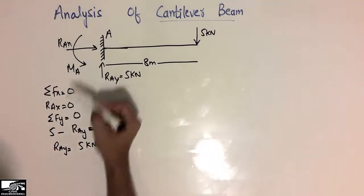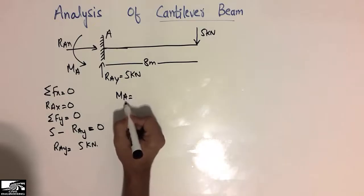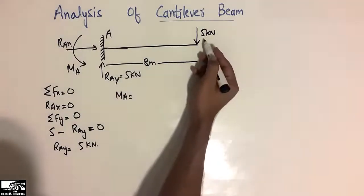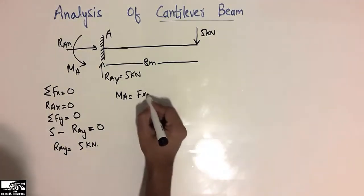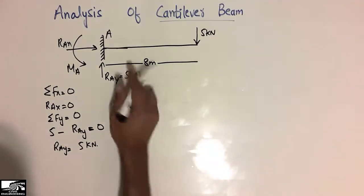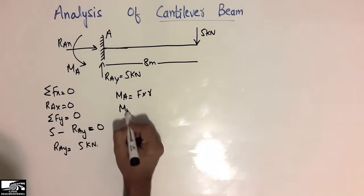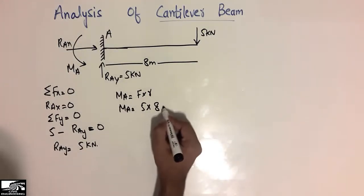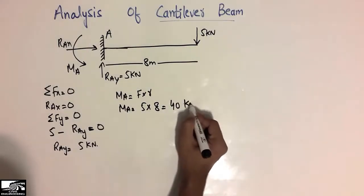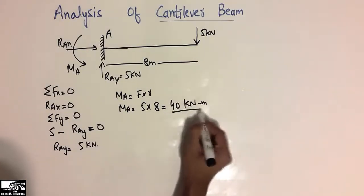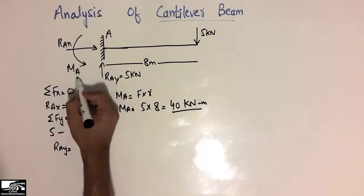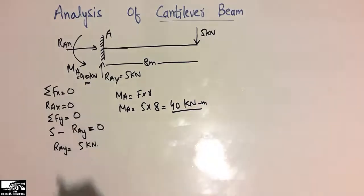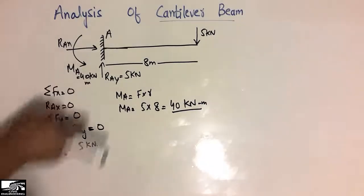Now we find the moment at point A. The moment is calculated as force multiplied by the moment arm distance. MA equals 5 kN multiplied by 8 meters, which gives 40 kN·m. This moment of 40 kN·m is resisted at the fixed support.